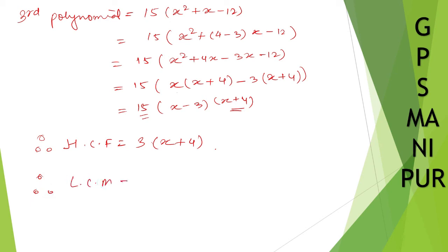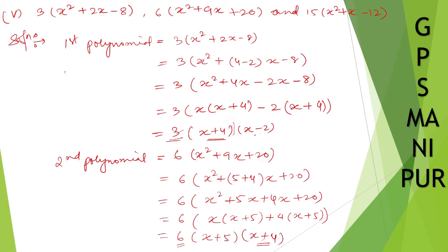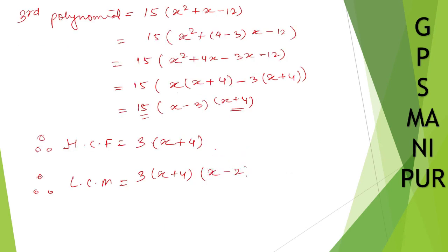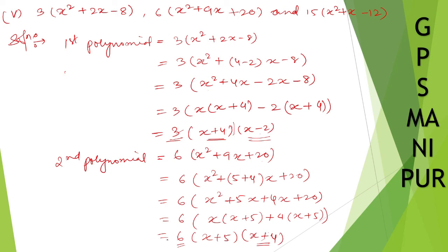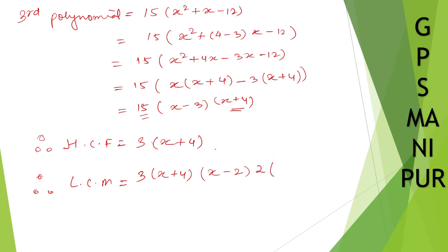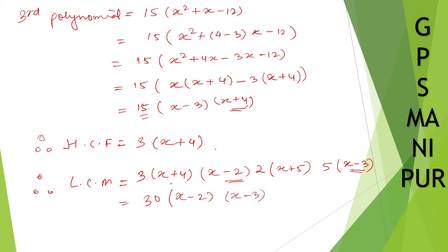The LCM is equal to the HCF multiplied by the remaining unique factors. The HCF gives us 3 and (x + 4). From the first polynomial, what's left is (x - 2). From the second polynomial, 3 goes into 6 leaving 2, and we have (x + 5). From the third polynomial, 3 goes into 15 leaving 5, and (x - 3) remains. So 3 × 2 × 5 = 30, giving LCM = 30(x - 2)(x - 3)(x + 4)(x + 5). I hope the answer is correct.